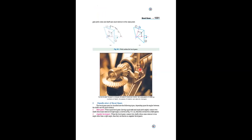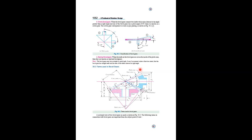Angular bevel gears connect two shafts whose axes intersect at an angle greater than the right angle. When the angle exceeds 90 degrees, the bevel gear is called a crown bevel gear. Also, there are internal bevel gears — when the teeth of the bevel gear are cut on the inside of the pitch cone, they are known as internal bevel gears.